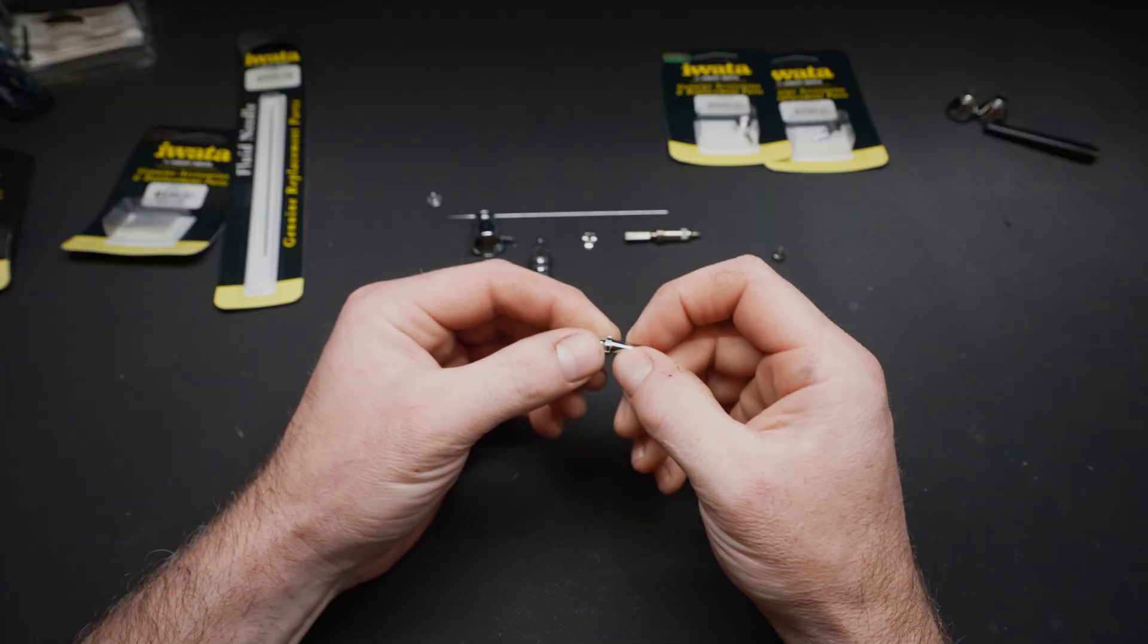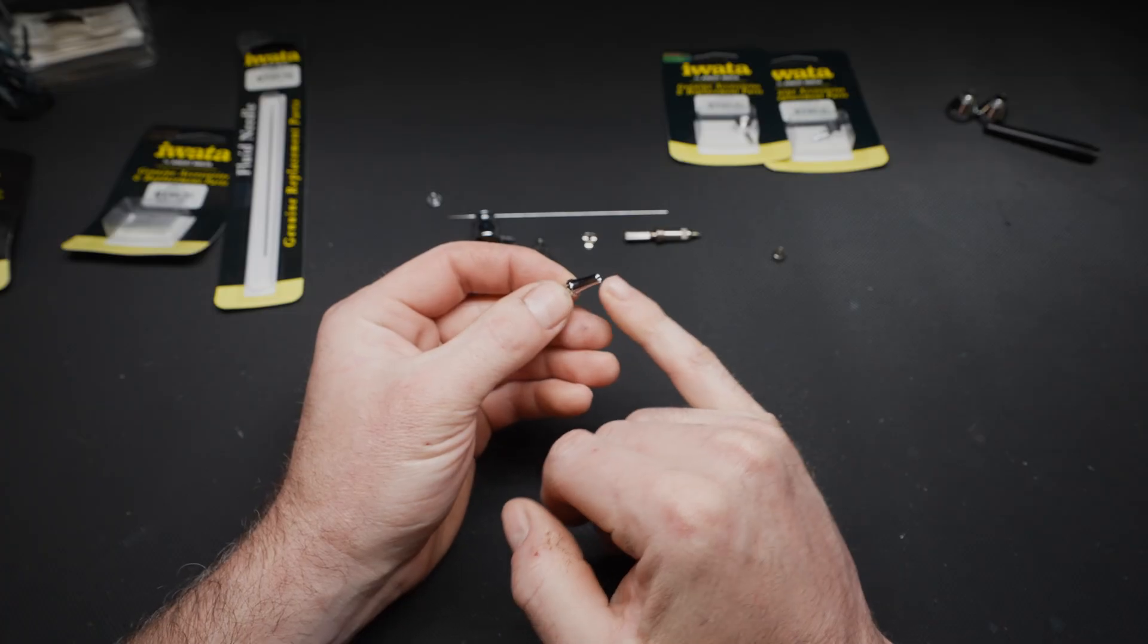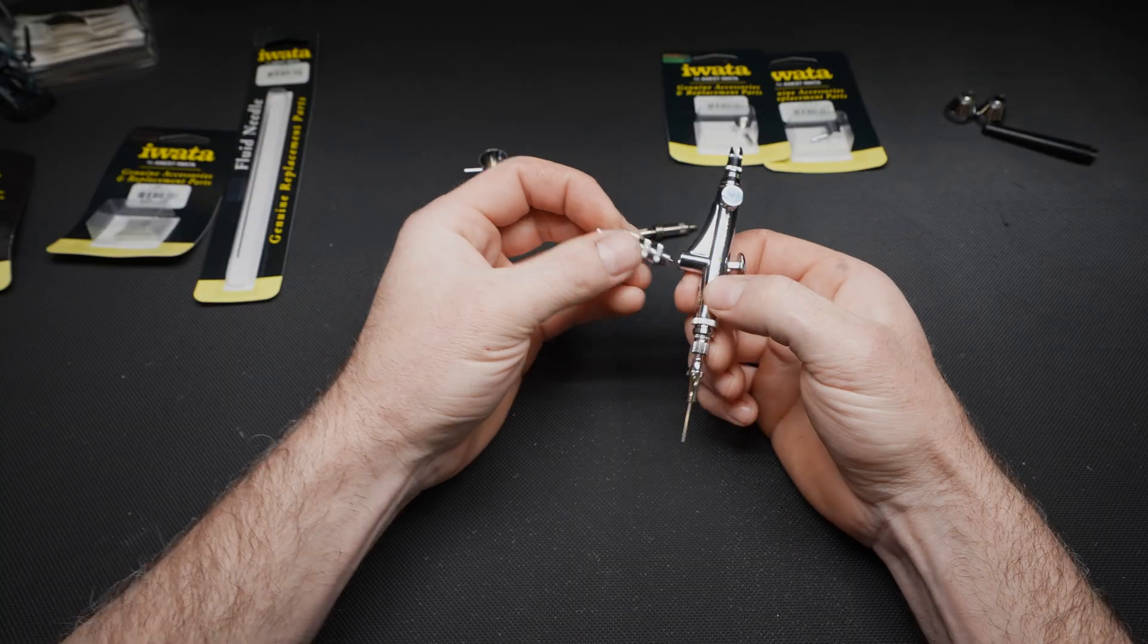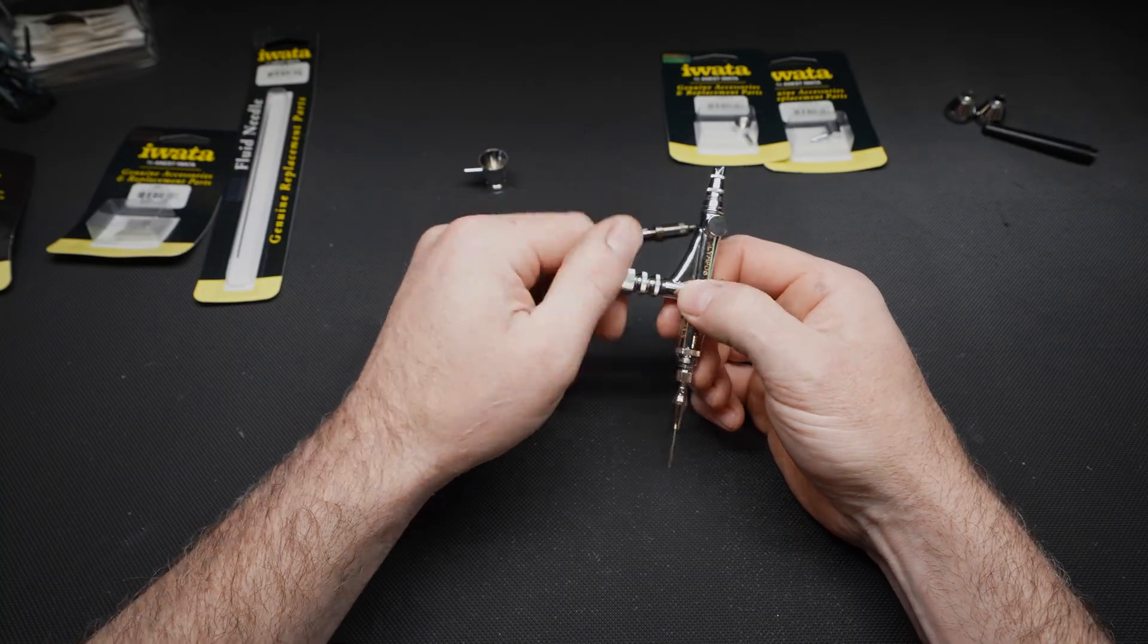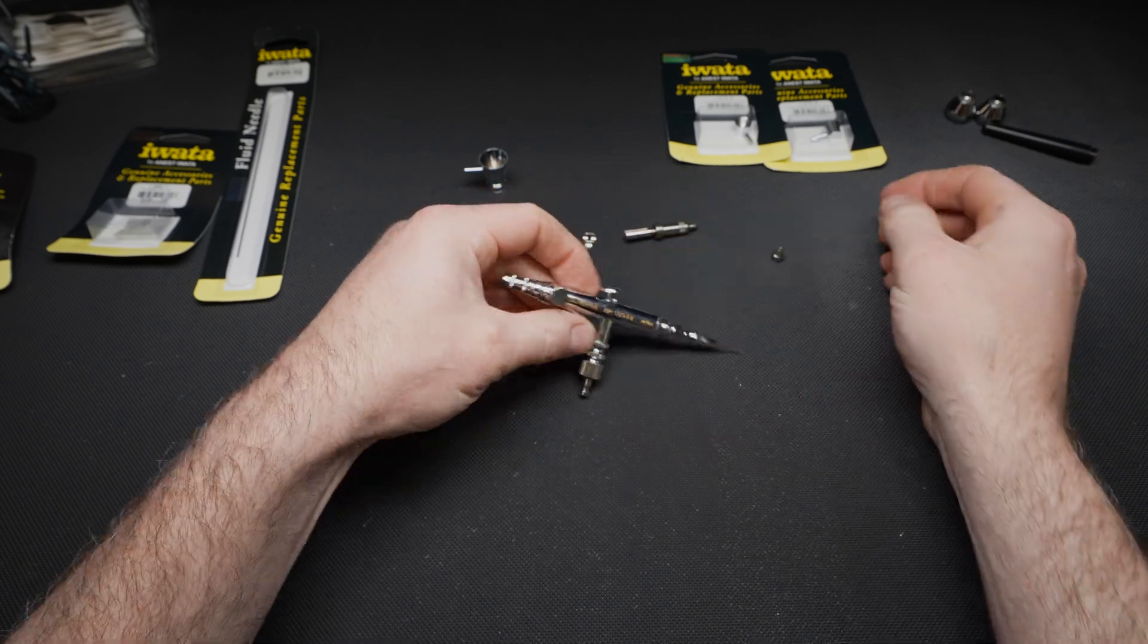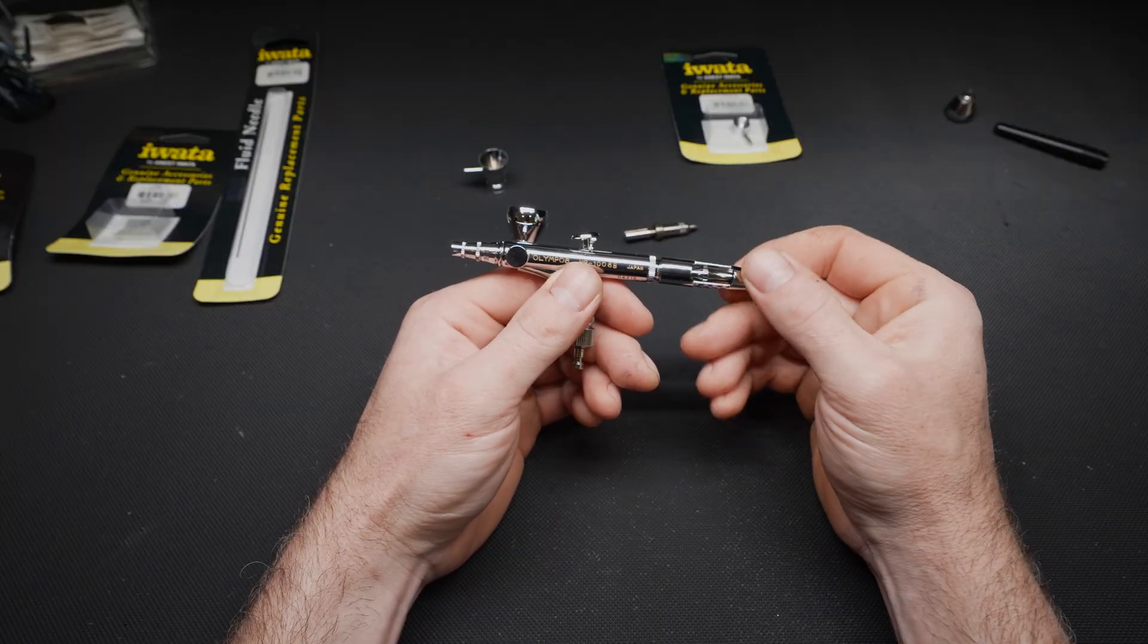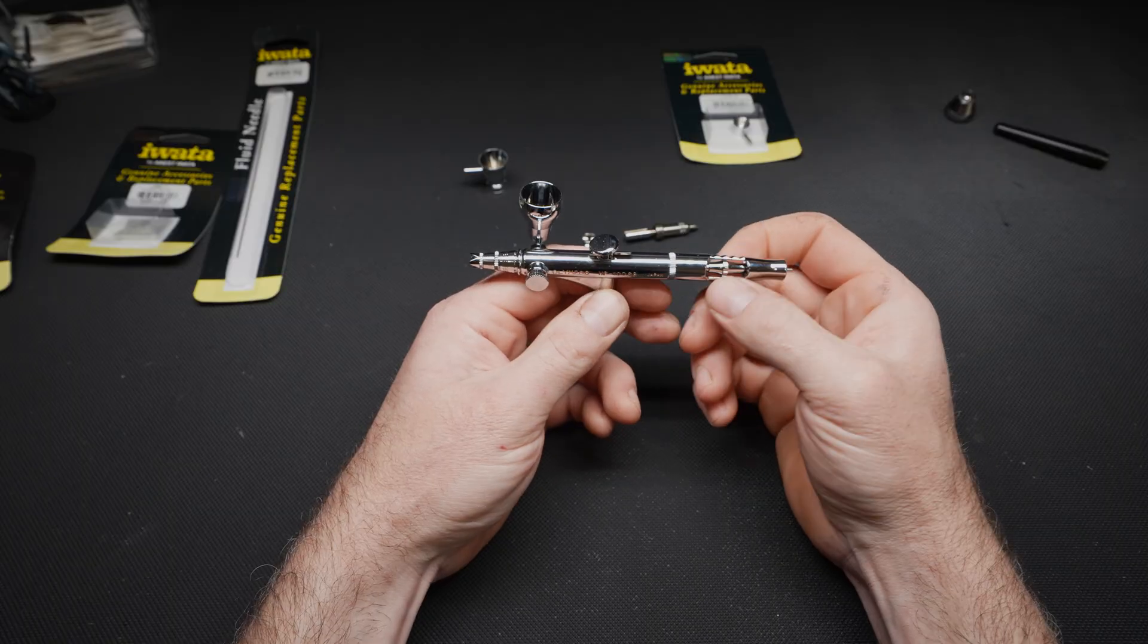Then came the Harder & Steenbeck chucking nut with a self-centering tail - it was going to sing with the mod I had in mind. I swapped out the old air valve with a new GSI Creos version: tighter, smoother, better. And for the end piece, I went with GSI again, picked for price, but it matched the Harder & Steenbeck nut so well it looked bespoke.